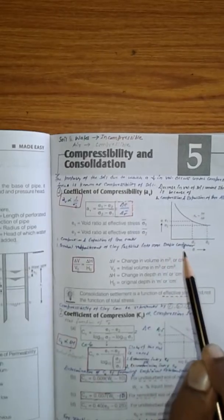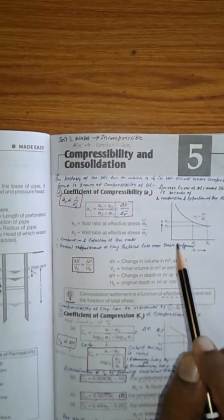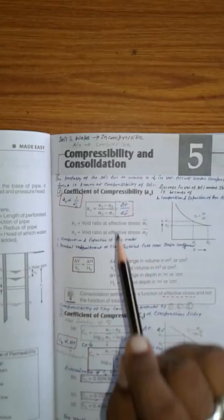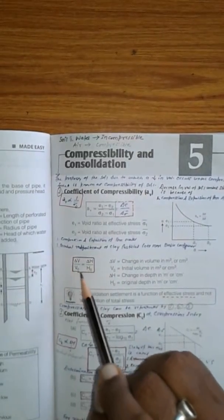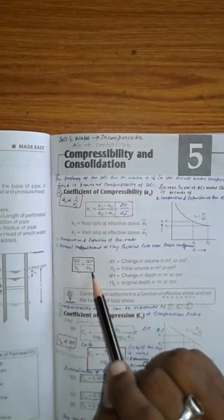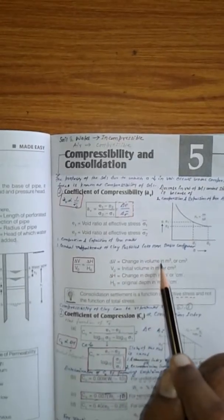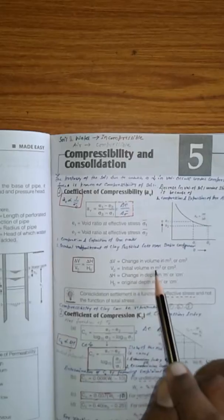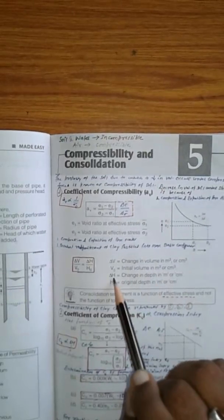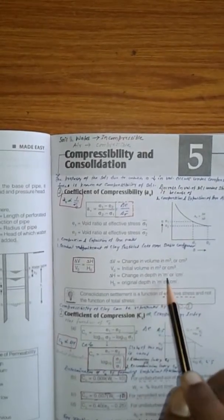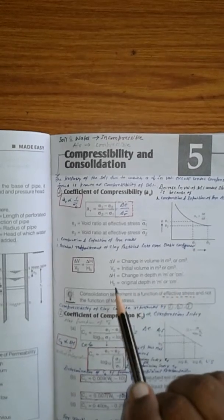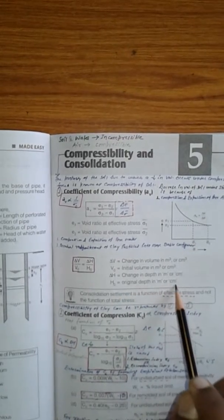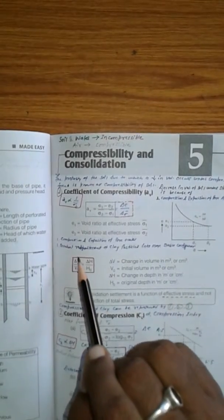Next relation is del V upon V0 equal to del H upon H0. Del V is the change in volume in meter cube or centimeter cube. V0 is the initial volume in meter cube or centimeter cube. Del H is the change in depth in meter or centimeter. H0 will be the original depth in meter or centimeter. That is del V upon V0 equal to del H upon H0.